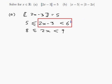And so you can see that we actually added 3 to everything. We added 3 here and here and here. So by the same logic, if we want to get rid of this 2 by dividing by 2, we should just divide all 3 parts by 2. So that would give us 4 is less than or equal to x, which is less than 4 and a half.